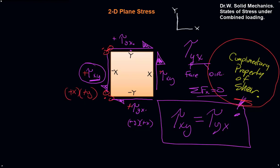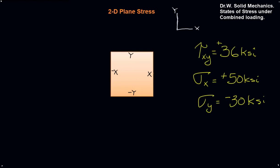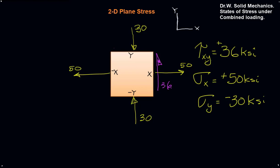Let's take a look at an example. If we're given a tau x-y shear stress of 36 ksi, a normal stress in the x-direction of positive 50, and a normal stress on the y-face of negative 30, fill in the state of stress for this element. Starting with x: it's positive, so it acts in this direction, and equal and opposite on the other face. In y it would be negative — compressive — so that's 30. On the x-face with a positive tau, we show 36. From there we know all four shear faces: 36, 36, 36, 36. That gives us the total state of stress.